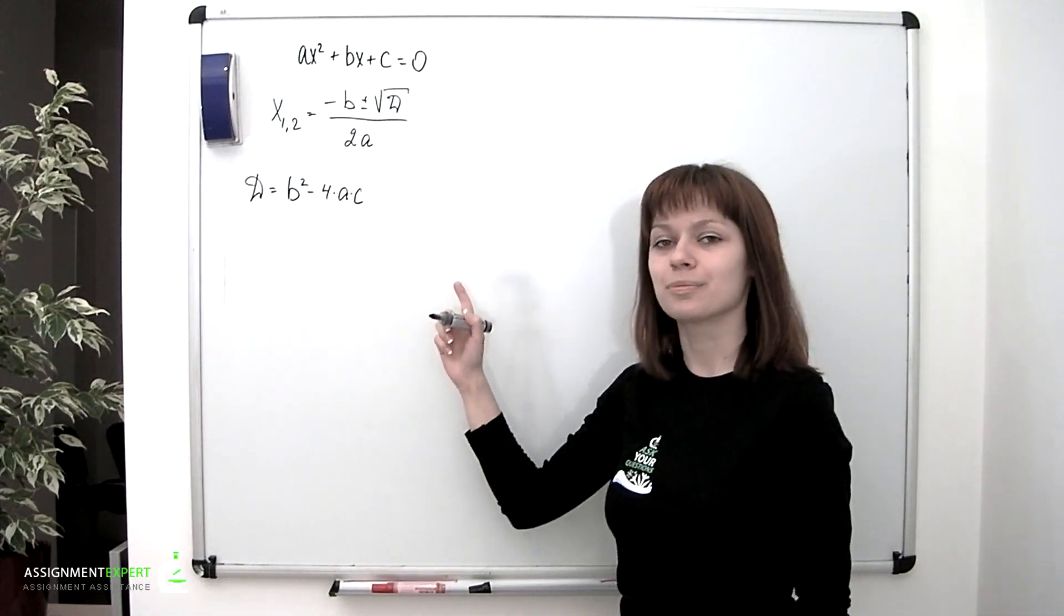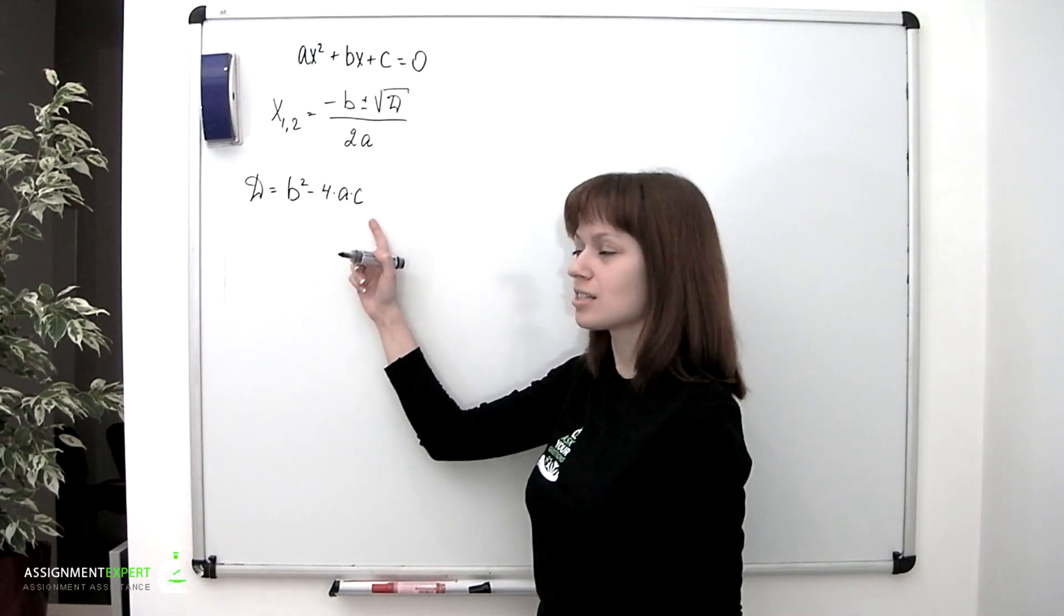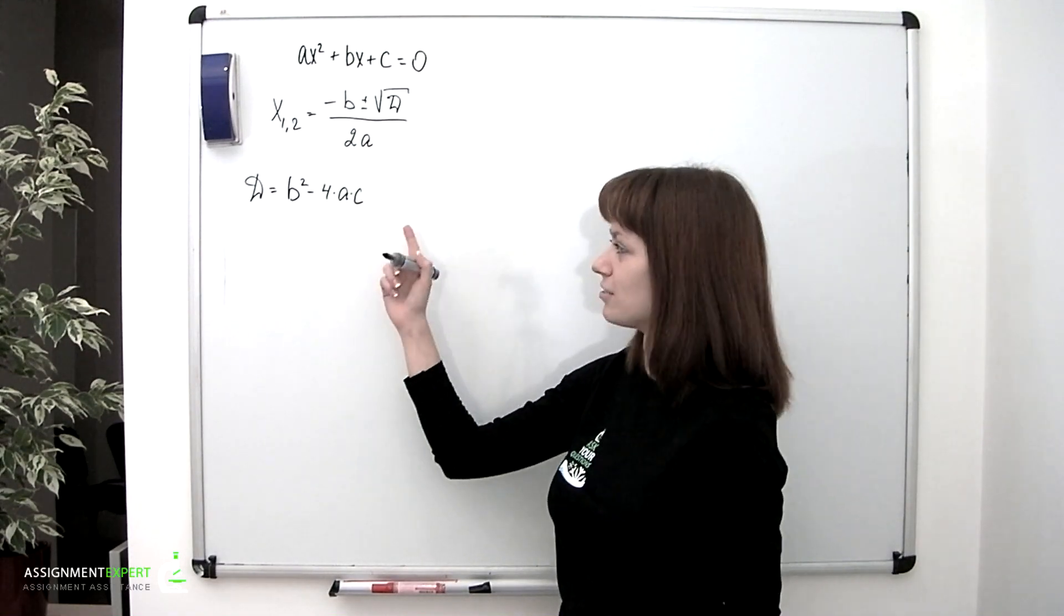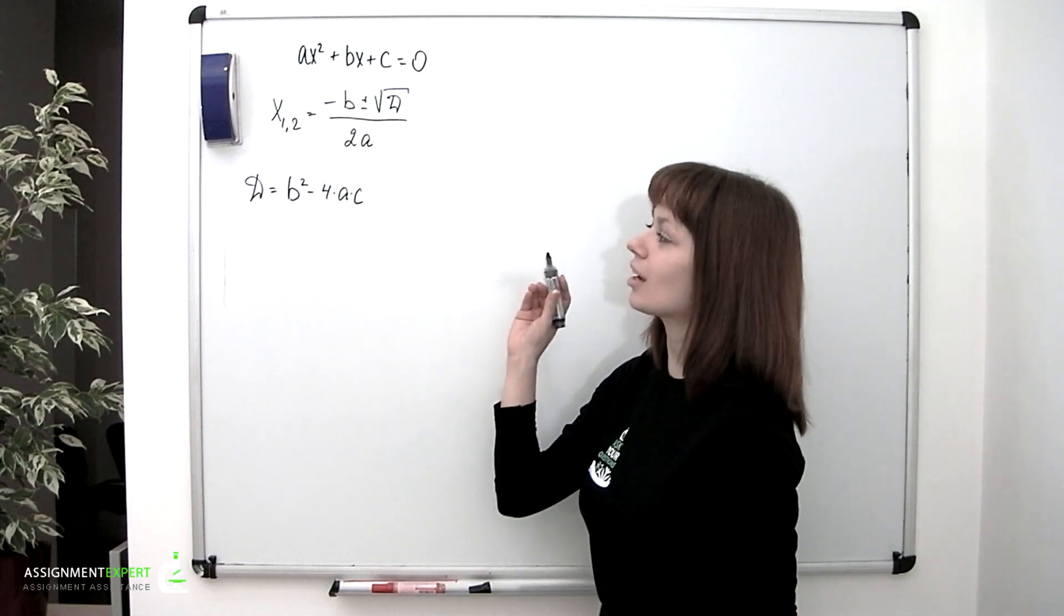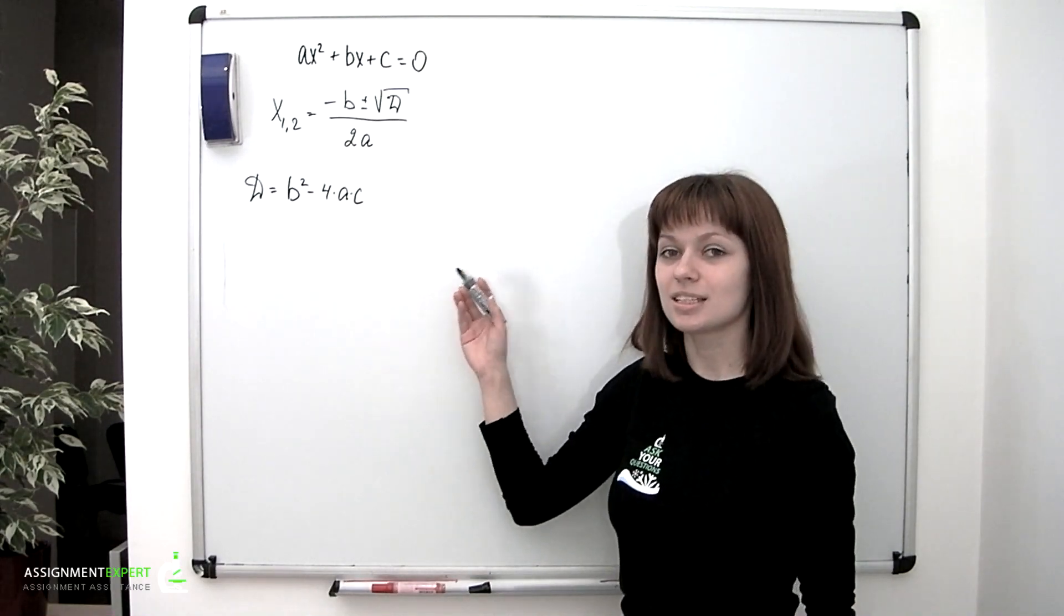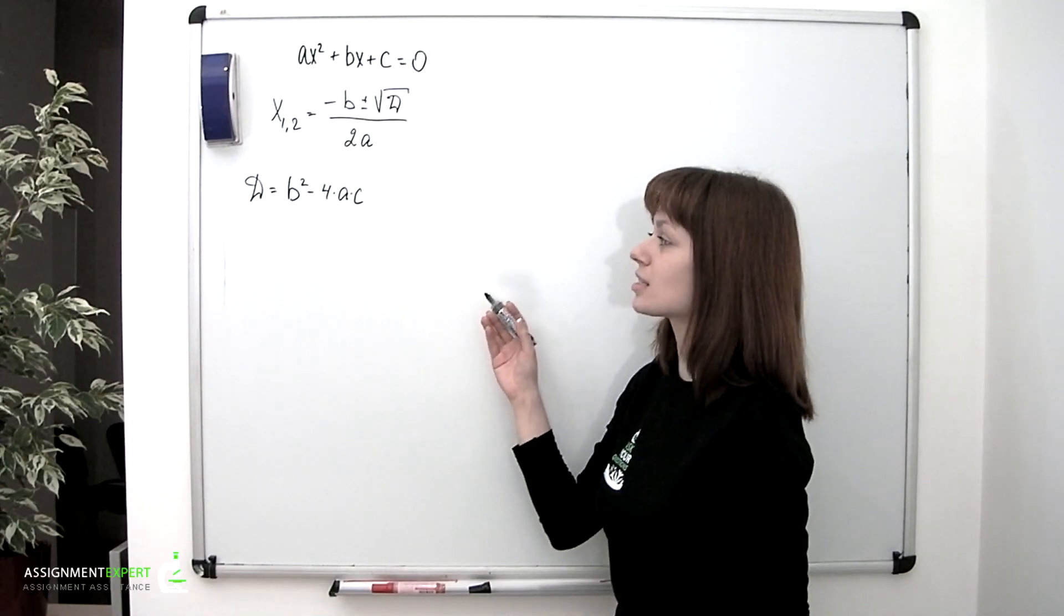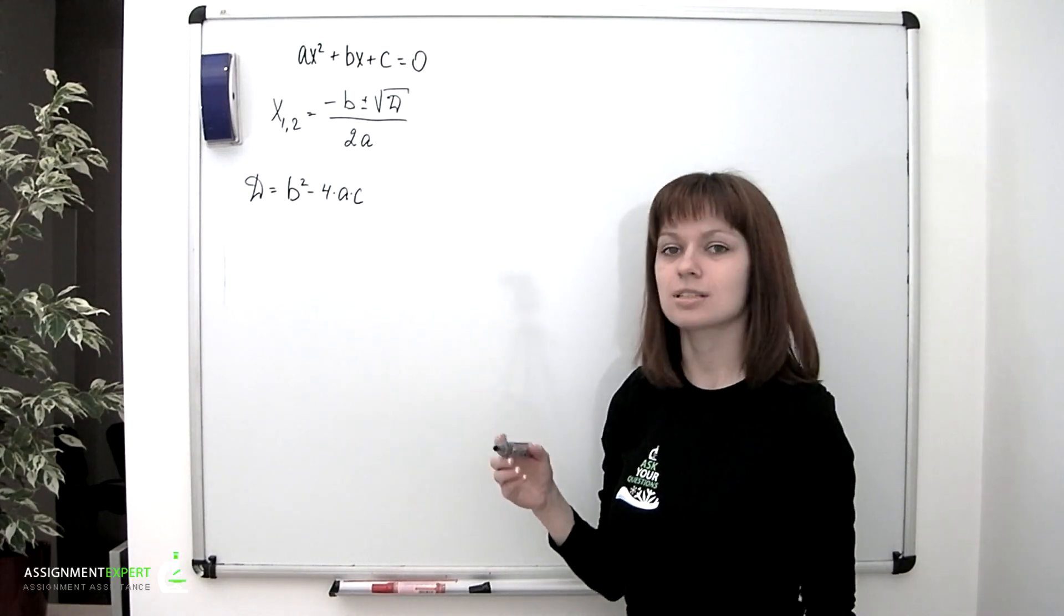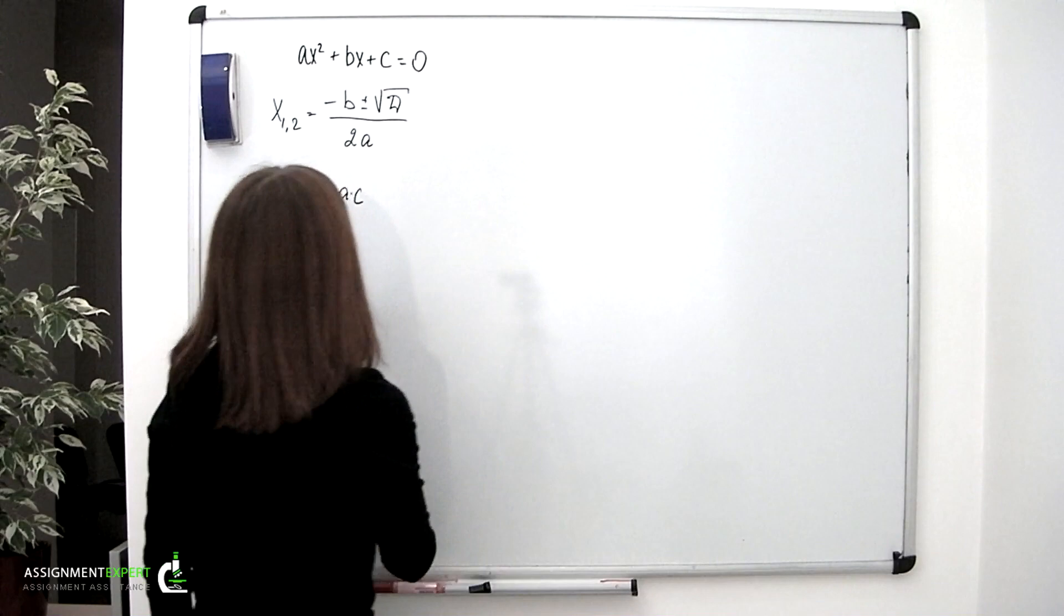Now as we know, if the discriminant is greater than zero, then such an equation has two distinct real roots. If d equals zero, then one real root. And for the third case, when d is less than zero, elementary math states that such an equation has no real roots. Why so? Let's see.